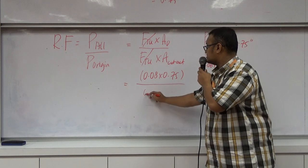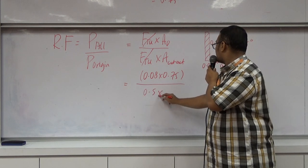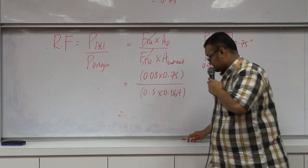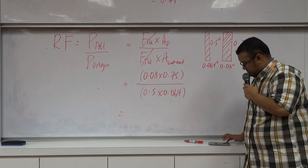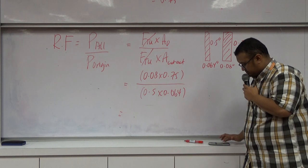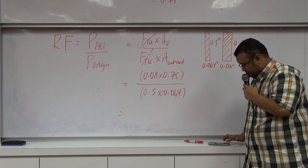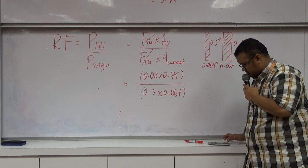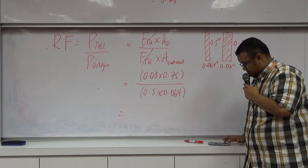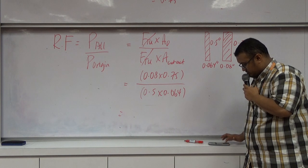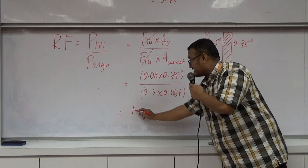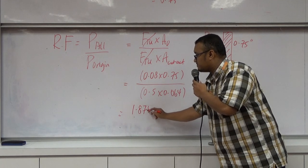Divide by 0.5 times 0.064. So you will get 1.875.